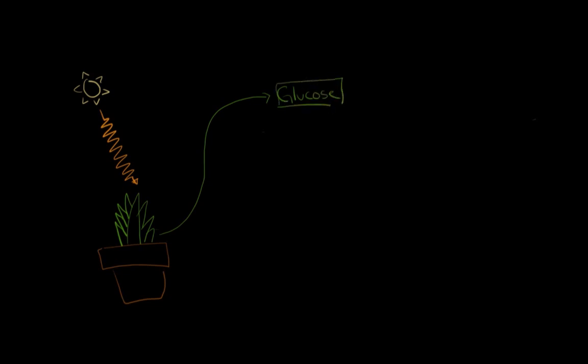Animals and humans then eat the glucose in these plants, and that glucose is then converted into a usable form of energy, which is known as ATP. And this process of adding energy to the system and creating glucose is known as photosynthesis. And this process of breaking down glucose into a usable form of energy is known as cellular respiration. So let's find out how this all happens.